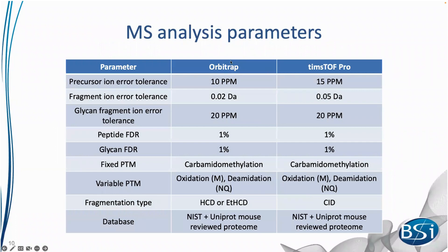Here are the MS analysis parameters used for the Orbitrap and TIMSTOF Pro. Precursor and fragment ion error tolerances are shown for each instrument; glycan fragment ion error tolerance is 20 ppm for each. Only peptides passing 1% peptide and glycan FDR are included. Fixed PTMs include carbamidomethylation since samples were reduced and alkylated. Variable PTMs include oxidation of methionine and deamination of asparagine and glutamine. Fragmentation types used were HCD and ETHCD on the Lumos, and CID on the TIMSTOF. The mouse UniProteome was downloaded and the NIST antibody sequence was added.